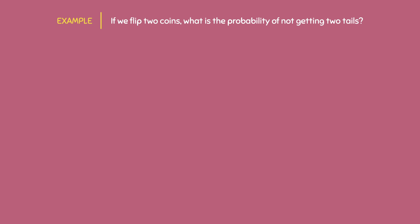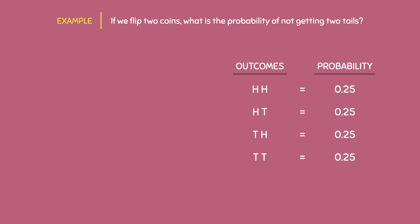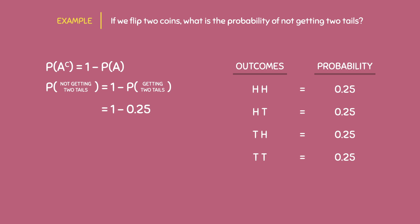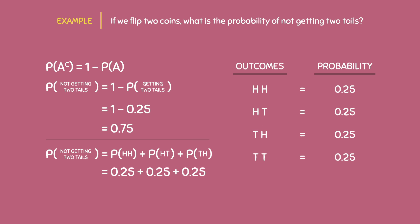For example, if we flip two coins, what is the probability of not getting two tails? Since we've worked with this example already, we already know the outcomes and the probabilities. Using the formula, the complement of A — the probability of not getting two tails — is equal to 1 minus the probability that it does happen, so it equals 1 minus the probability of getting two tails. The probability of getting two tails is 0.25, so 1 minus 0.25 gives us an answer of 0.75. The probability of not getting two tails is therefore 0.75 or 75%. We could have also just added together all the probabilities of the outcomes that didn't include two tails — the probability of HH plus HT plus TH — which also gives us 0.75.